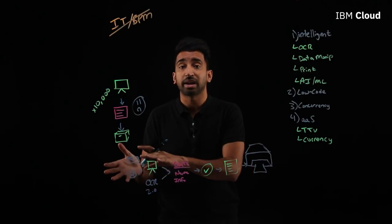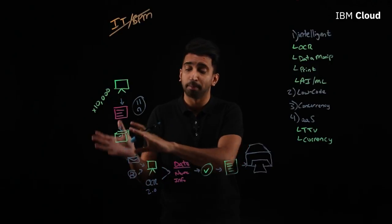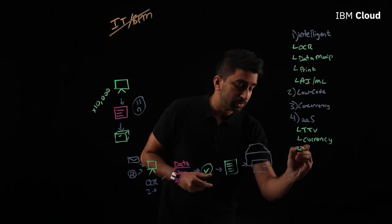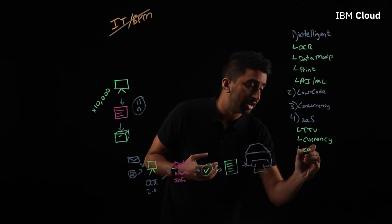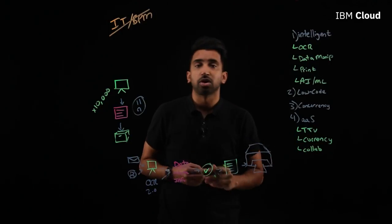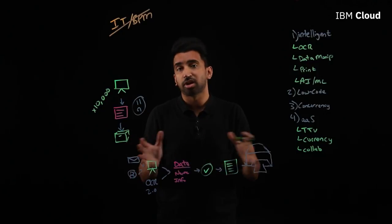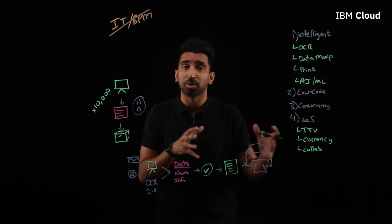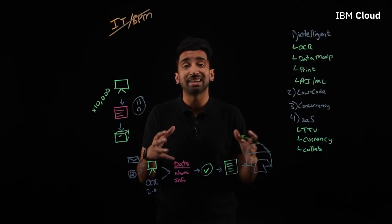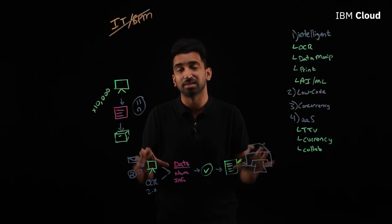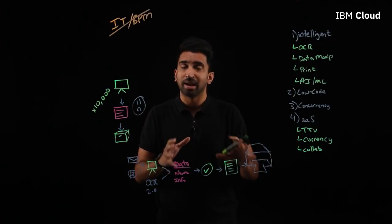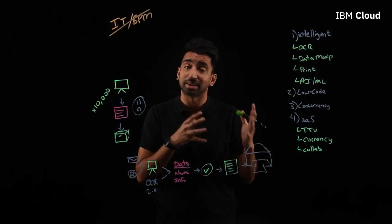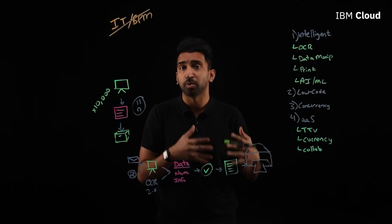Maybe OCR 2.0 helps fix some of the bugs with pulling data from customer complaint forms. Finally, RPA as a service allows you to collaborate. Imagine Pete builds this automation, publishes it, and then wants to share it with the Nashua branch of his company, so they can take advantage of the same process to automate the flow and file customer complaint forms. As-a-service environments are generally multi-tenant and enable you to collaborate with your coworkers.